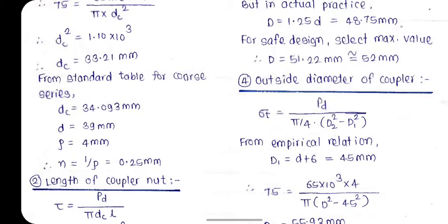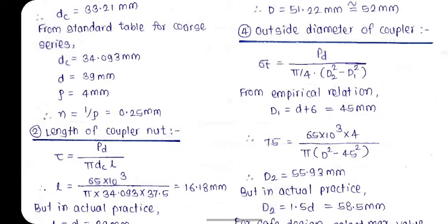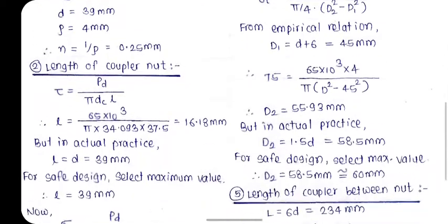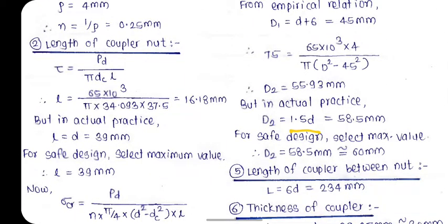The next step is the outside diameter of the coupler, d2. The equation is σt = PD / (π/4 × (d2² − d1²)), where d1 = d + 6 mm = 45 mm from the empirical relation. Substituting gives d2 = 55.93 mm. In actual practice, d2 = 1.5 × d = 58.5 mm. Comparing both values and selecting the larger, the design value is rounded to 60 mm.